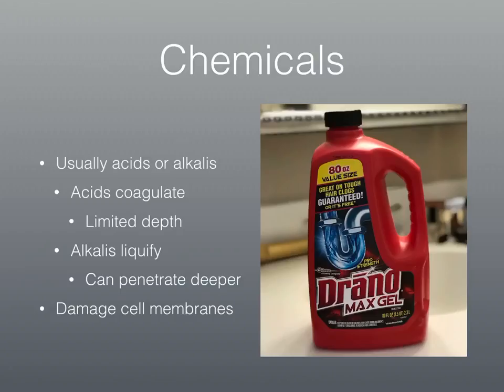The chemicals that cause burns tend to be very acidic or very alkaline. Acids cause what they call coagulation — it damages the cell membranes, and the fluids from inside the cells leak, and with acids it tends to clump together and coagulate. This kind of limits how deep most acid burns can go, unless it's a very potent acid.